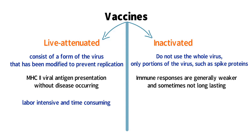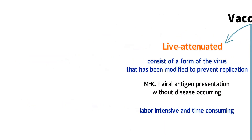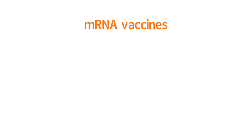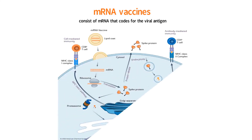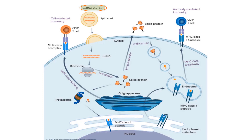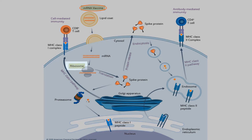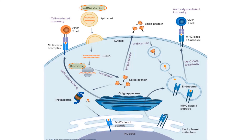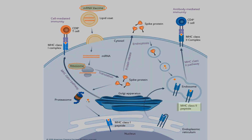mRNA vaccines were developed to address the limitations of live attenuated and inactivated vaccines. Instead of the virus or parts of the virus, mRNA vaccines consist of mRNA that codes for the viral antigen. After being injected into the body, the mRNA is drawn to dendritic cells, and the dendritic cells take up the mRNA from the vaccine. Now that the mRNA from the vaccine is in the cytoplasm of the dendritic cells, the mRNA is able to connect with the ribosomes and be translated. Since the mRNA codes for the viral antigen, as the mRNA is translated, it is producing the viral antigen, which is then presented on the MHC-2 of the dendritic cell.